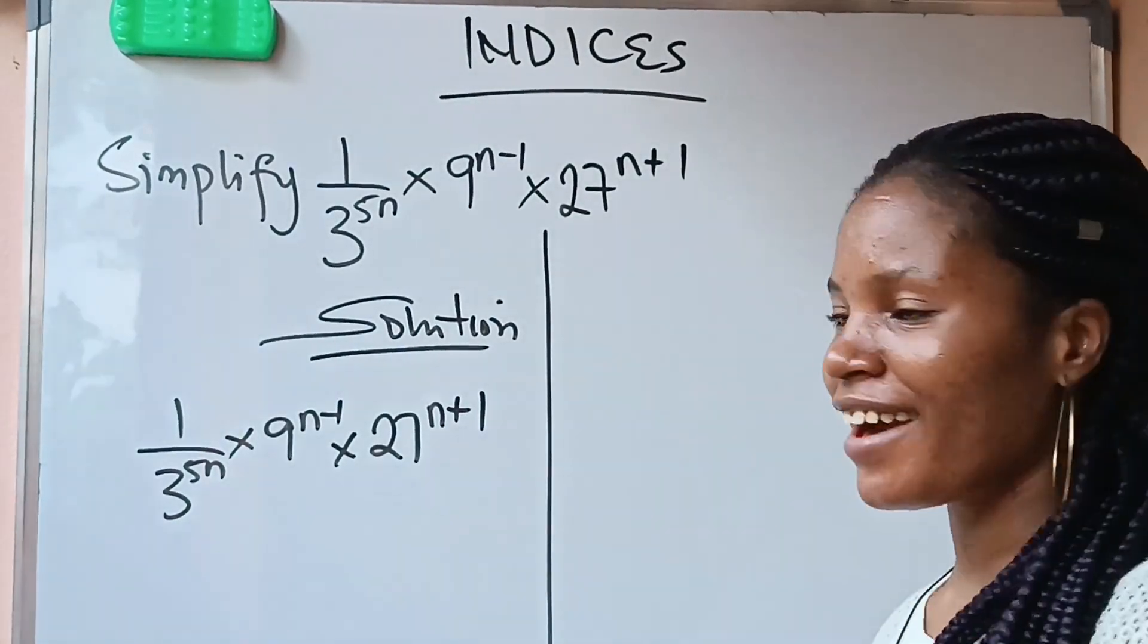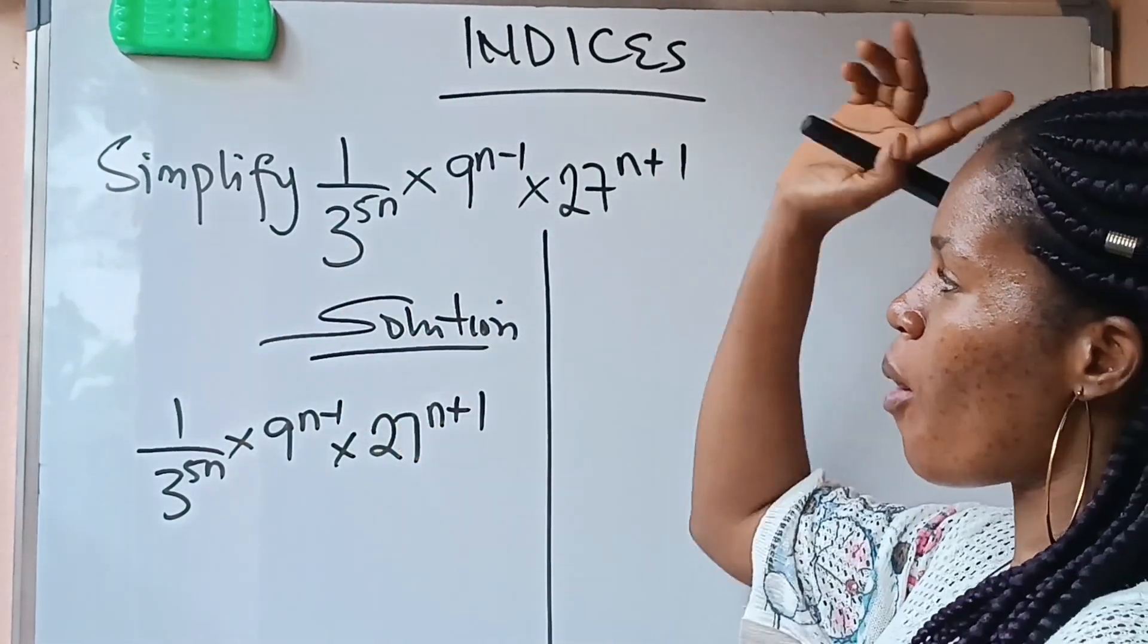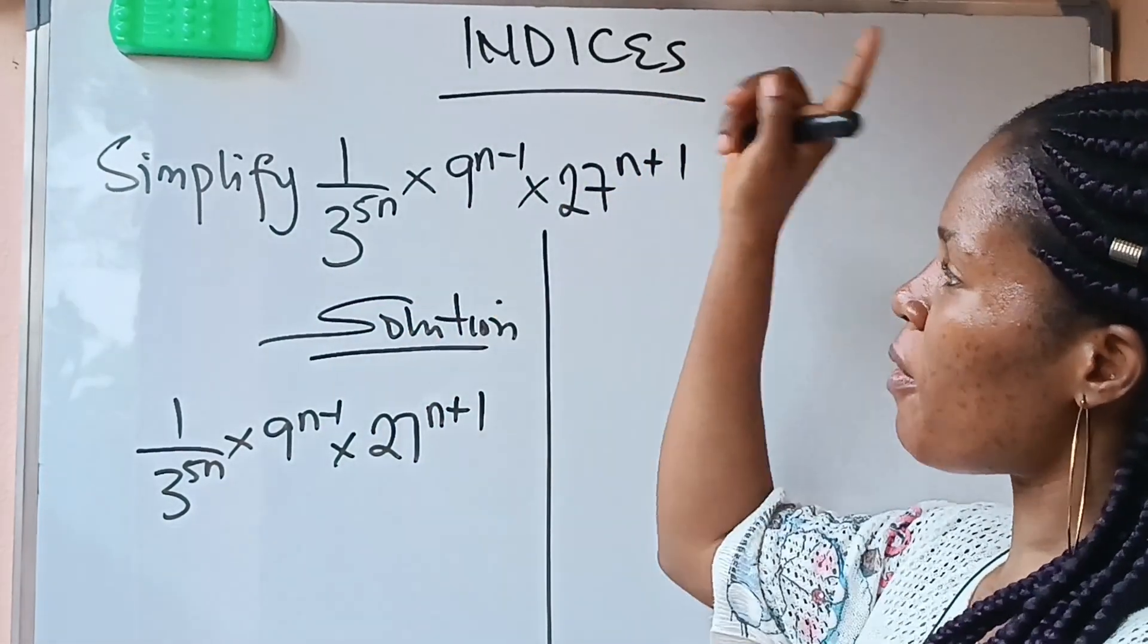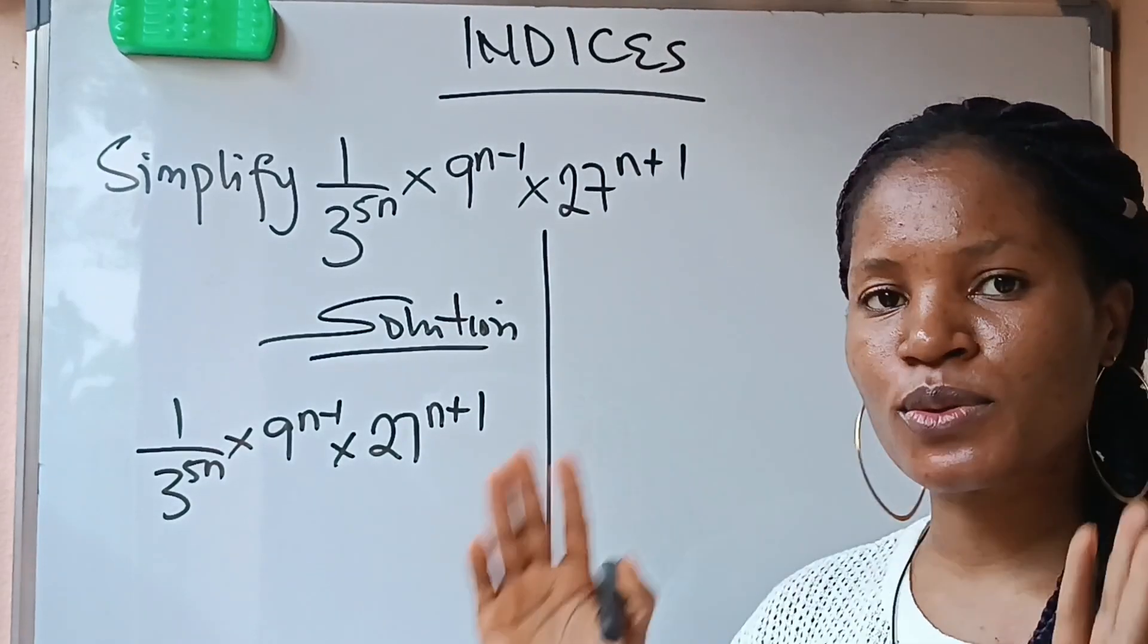Welcome to my channel. Good day. We are asked to simplify 1 over 3 raised power of 5n times 9 raised power of n minus 1 times 27 raised power of n plus 1.